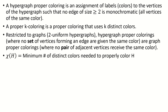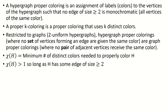Just like in graph theory, we define the chromatic number of a hypergraph to be the smallest number of colors needed to properly color that hypergraph. As long as a hypergraph has some edge of size 2 or greater, we have to use at least two colors in a proper coloring, meaning the chromatic number will be greater than 1.